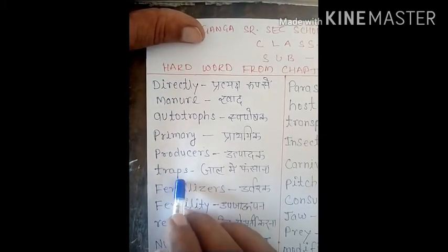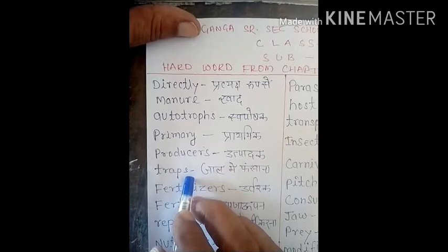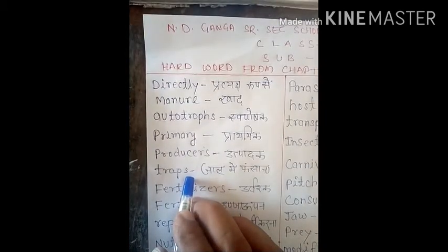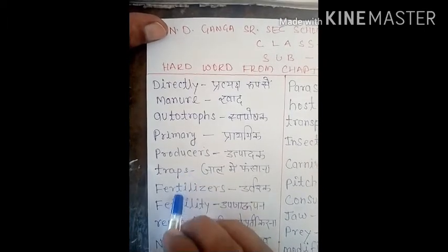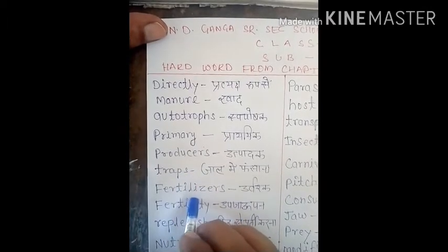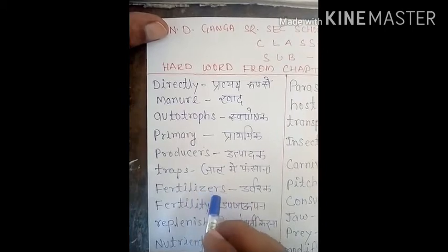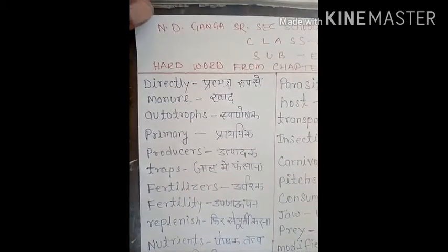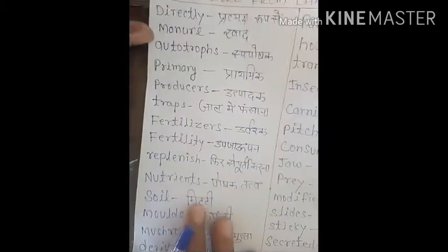Next word is 'traps', T-R-A-P-S. Traps means 'jal mein fasana'. Bahut common word hai, traps. Next word is 'fertilizers', F-E-R-T-I-L-I-Z-E-R-S, meaning 'urvarak'. Which we buy from the market, just like urea, nitrogen, etc.